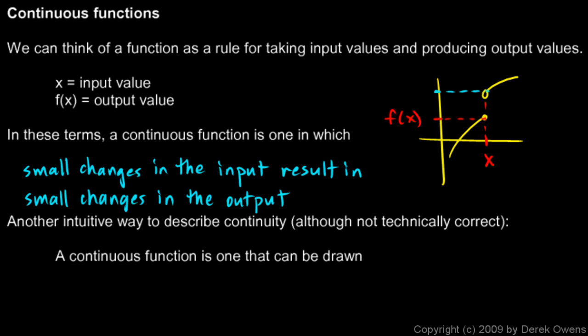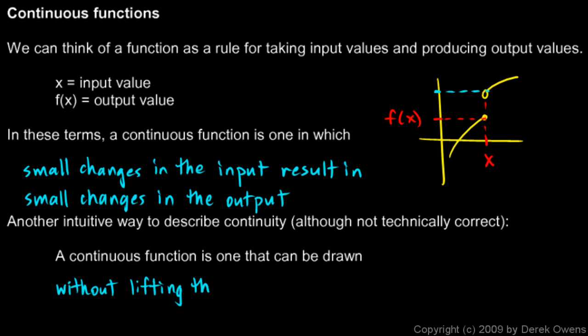There's another intuitive way to describe continuity: a continuous function is one that can be drawn without lifting the pencil from the paper. You can see that's not the case for a discontinuous function — if you're drawing a function with a step discontinuity, you get to the discontinuous point, have to pick your pencil up, and then put it back down to continue drawing. If it were continuous, you could draw it without lifting the pencil from the paper.